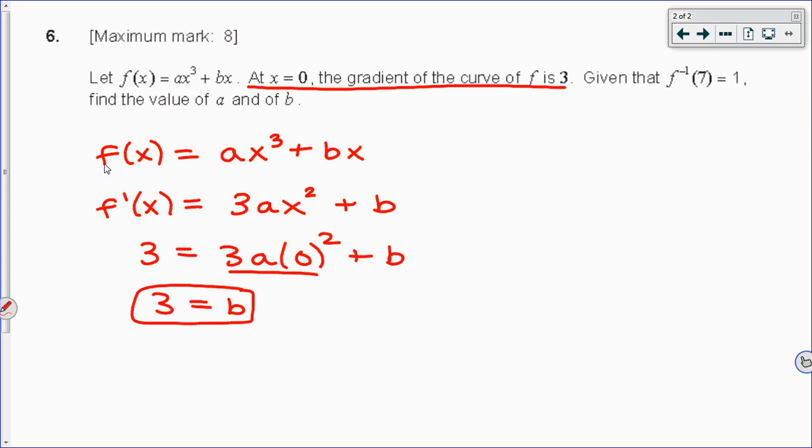And then, they're giving us another piece of information: given that f inverse of 7 equals 1, this is the other piece of information. There's a lot of information right there. So that negative 1, when it's sandwiched between the f and the x in an f of x, is not an exponent, and it is not the same as prime. That f negative 1 means the inverse of f.